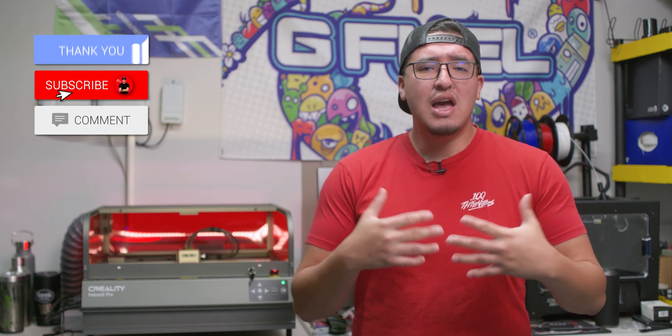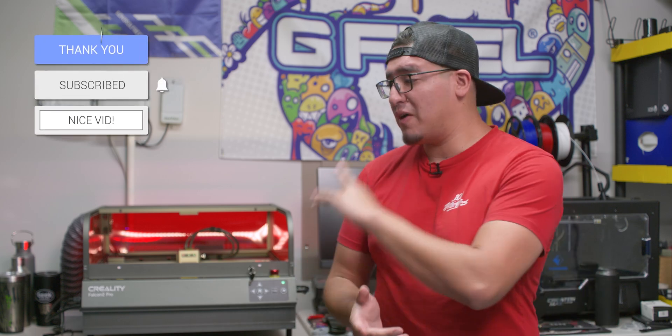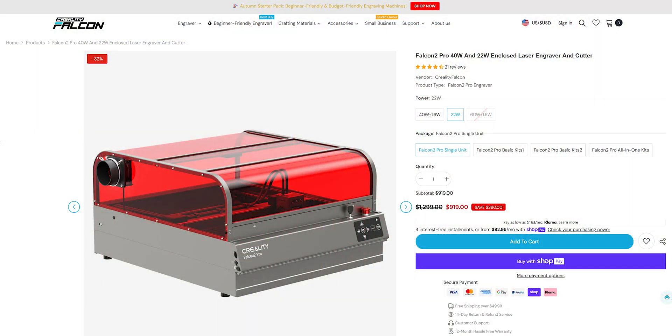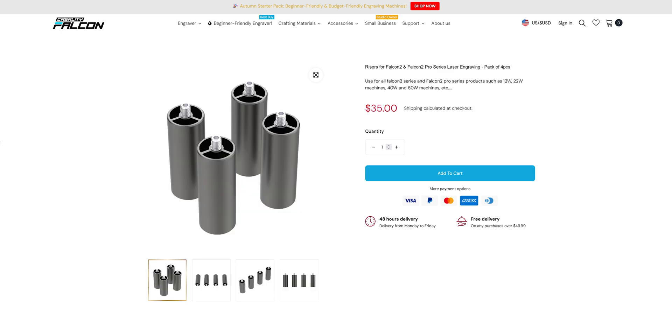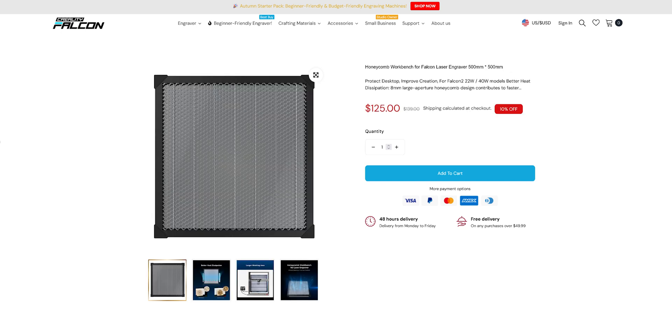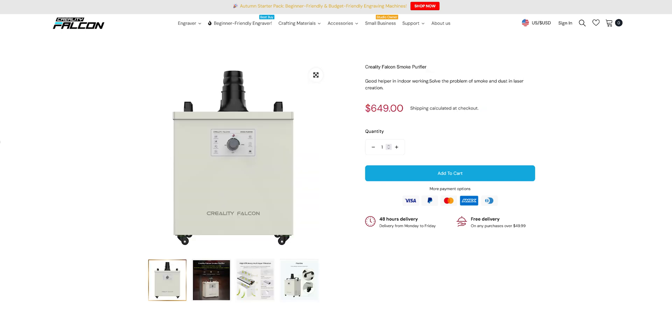Apart from the Falcon 2 Pro, which is the 22 watt version by the way, we also got the Rotary Kit Pro for mugs, rings, and curved surfaces, the riser for when you're using the Rotary Kit Pro, and the honeycomb workbench for better heat dissipation.